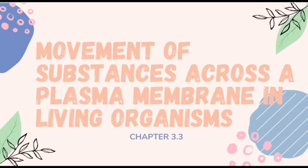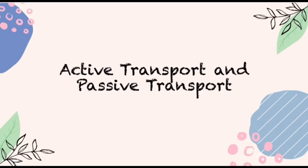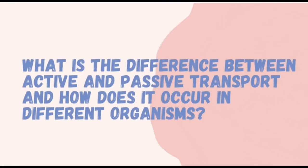Movement of substances across the plasma membrane in living organisms. Substances move in and out of our body cells for living processes. To do this, cells require a specific mechanism to transport these substances — we call them active and passive transport. What is the difference between the two and how does it occur in different organisms?